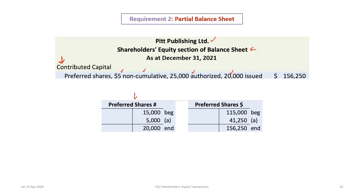The preferred share T-accounts show a beginning balance of 15,000 shares ($150,000), with the lump sum issue in transaction A adding another 5,000 shares ($41,250), giving us 20,000 shares at a total carrying value of $191,250.